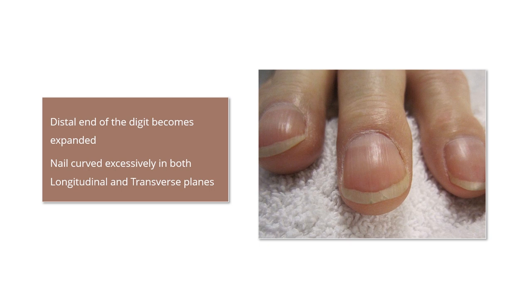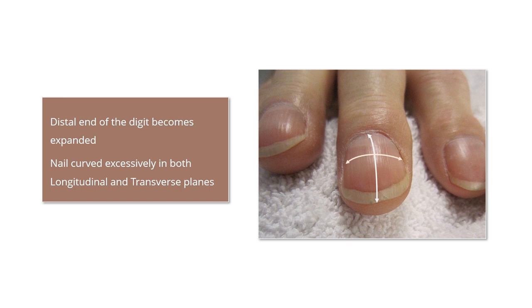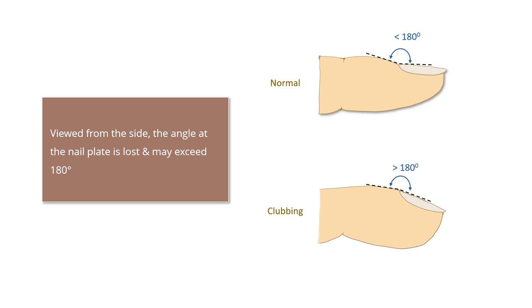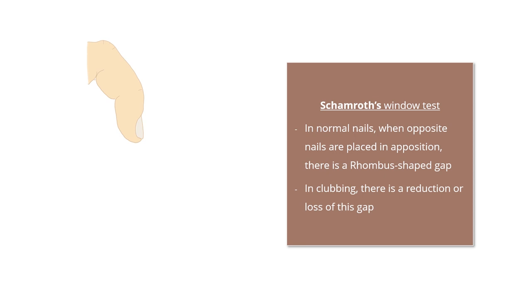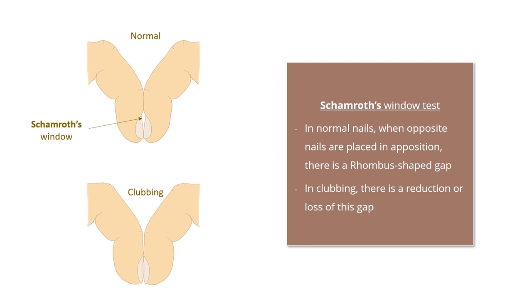In clubbing the distal end of the digit becomes expanded, with the nail curved excessively in both longitudinal and transverse planes. Viewed from the side, the angle at the nail plate is lost and may exceed 180 degrees. In normal nails, when opposite fingernails are placed together, there is a diamond-shaped or rhombus-shaped gap known as the Schamroth window.